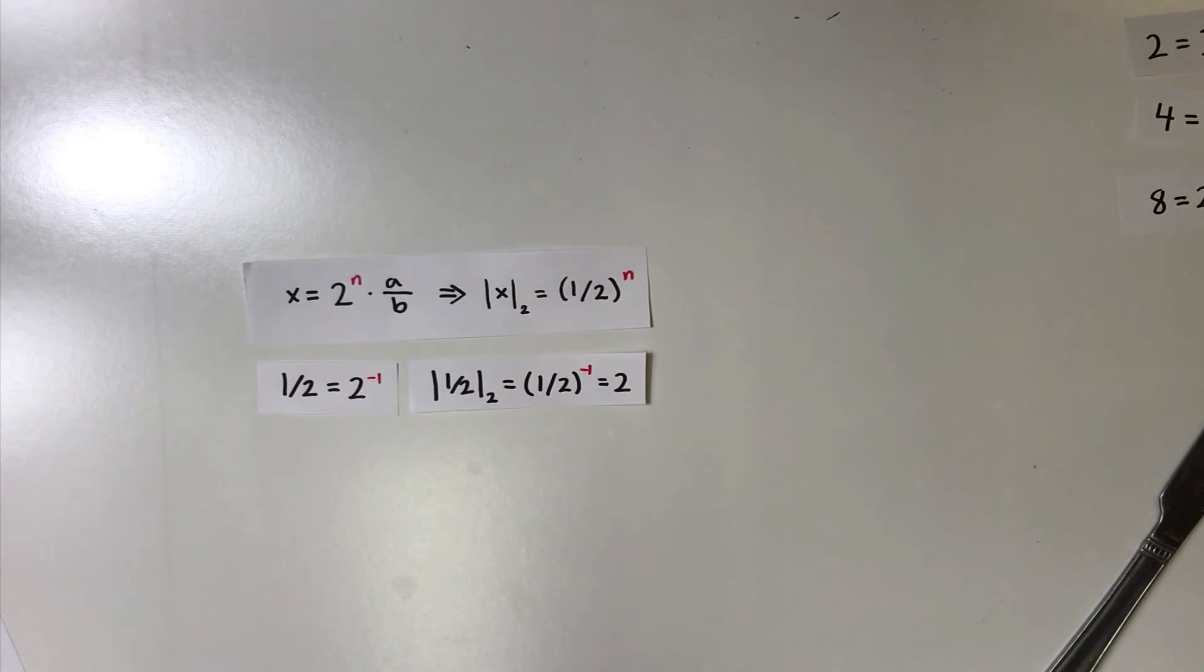By the same process, 2-adic of 1 over 4 is 4. Now, take a moment to figure out 2-adic of 1 over 8.